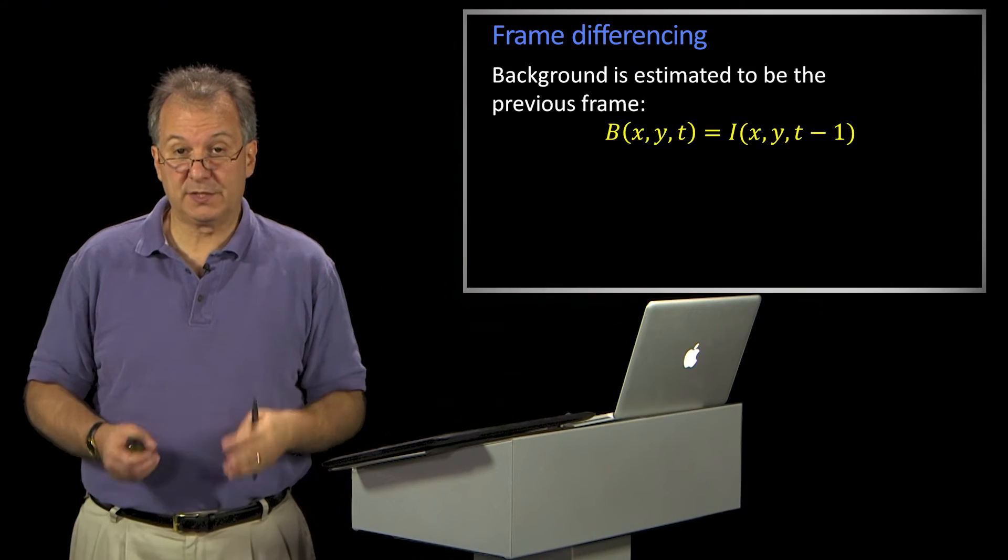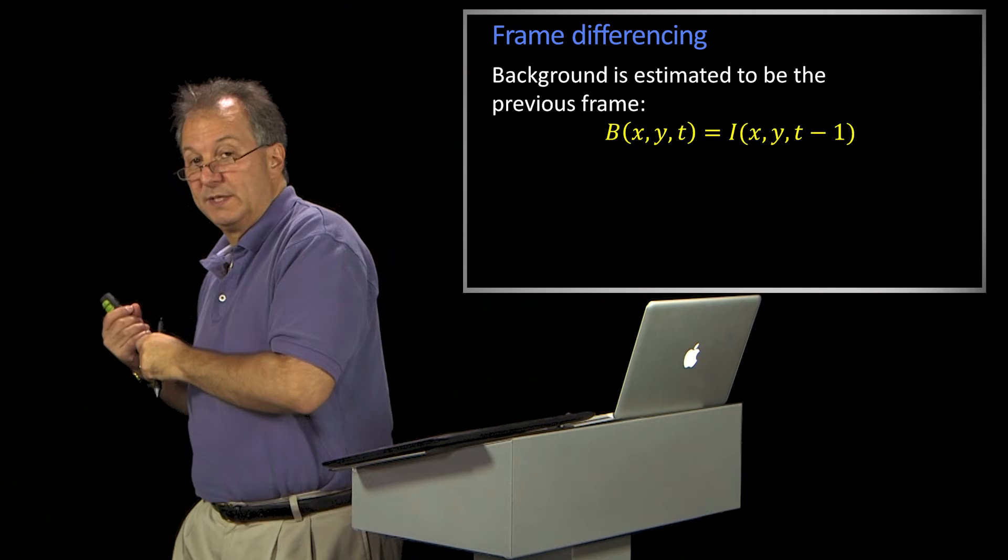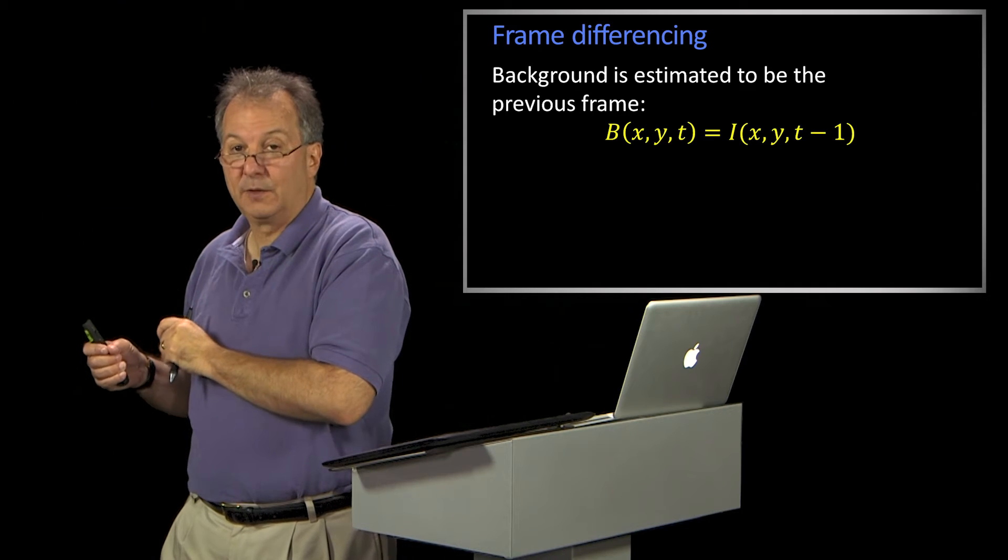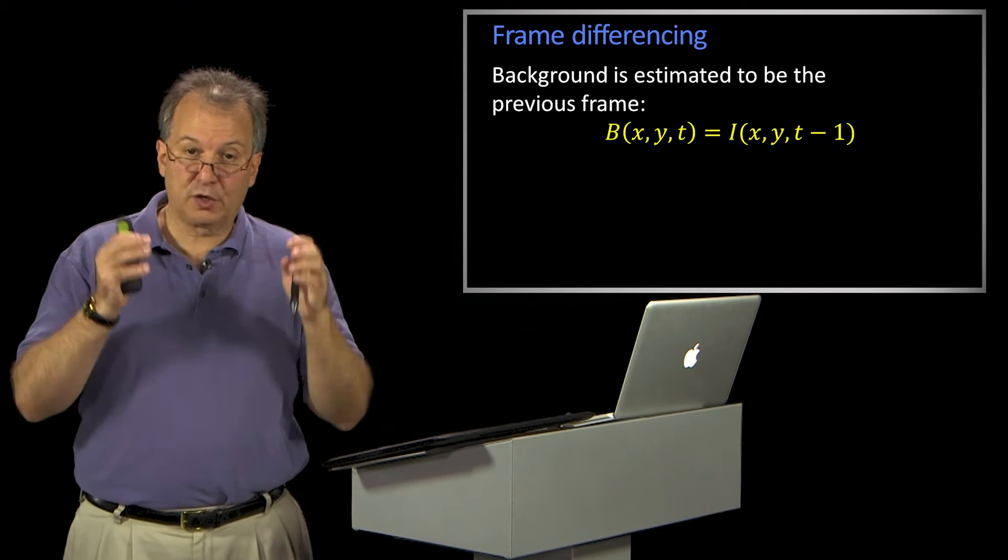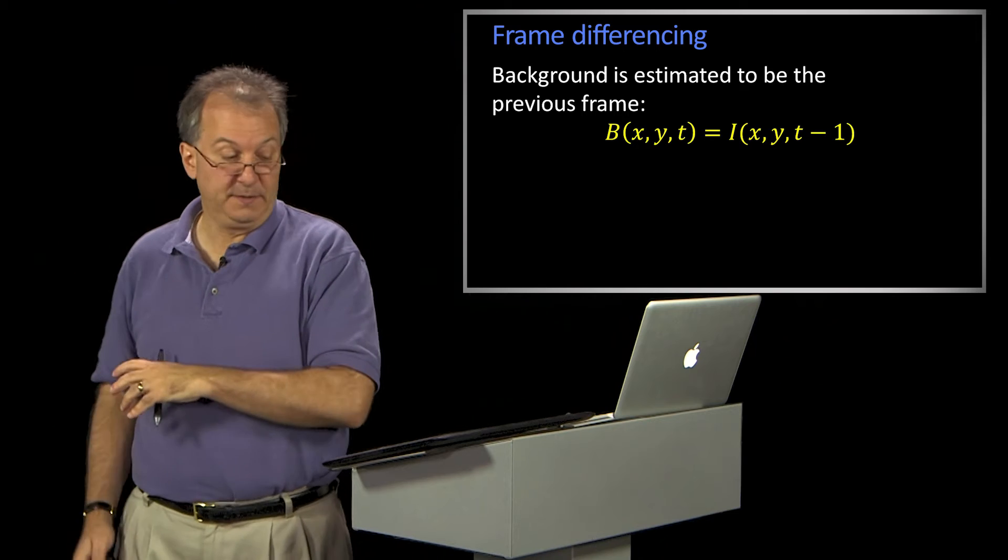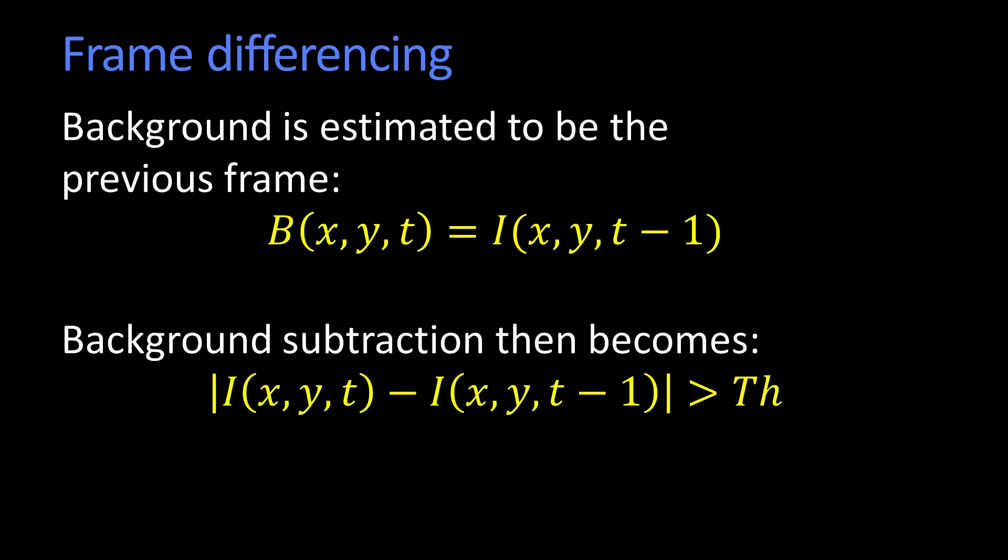There's a form of background subtraction which isn't really background subtraction at all, and it's referred to as frame differencing. Frame differencing is exactly what you might think. I'm going to assume that the background is whatever was in the picture just before. I'm just going to compare the current image to the last image. Background subtraction becomes then I(x, y, t) minus I(x, y, t-1). And if that value is greater than some threshold, I'll output that as my foreground mask.